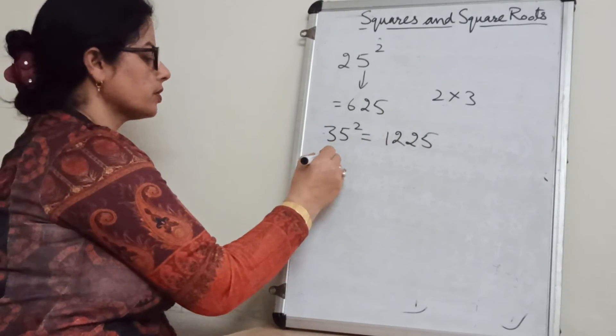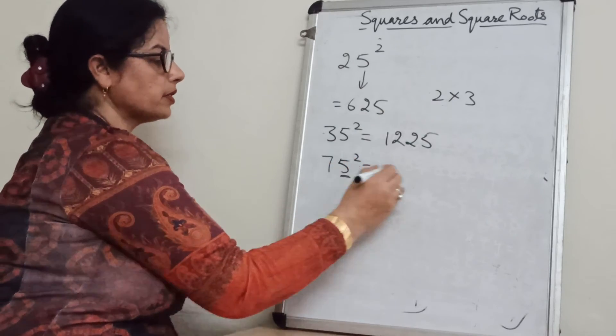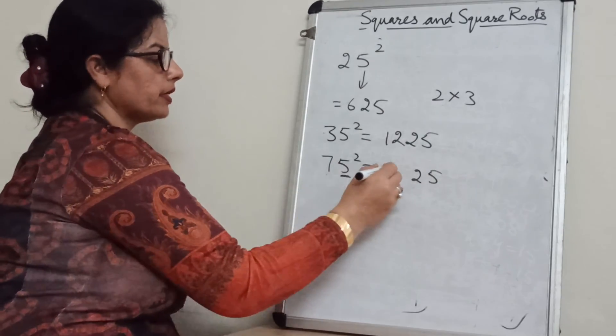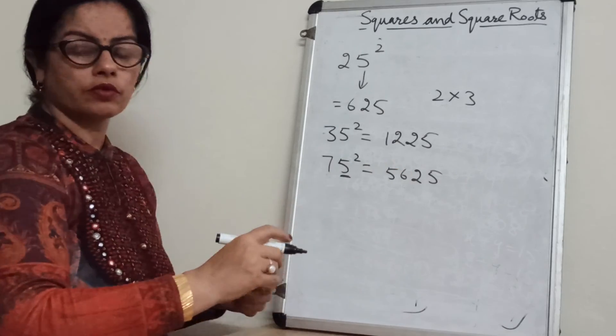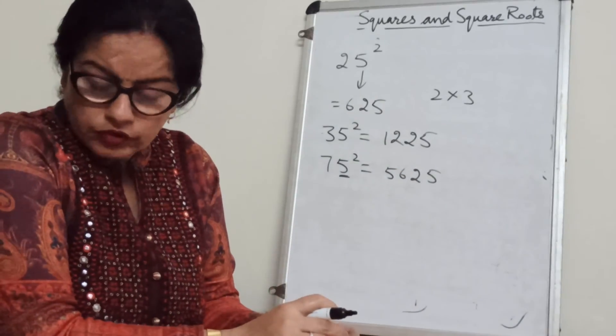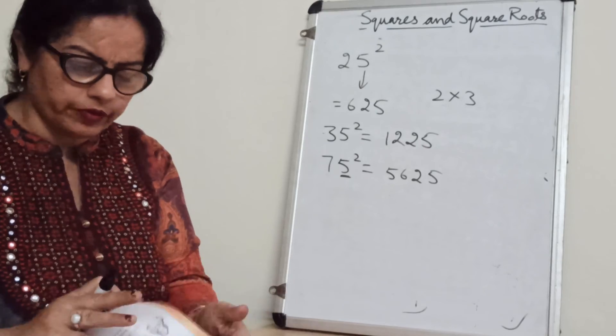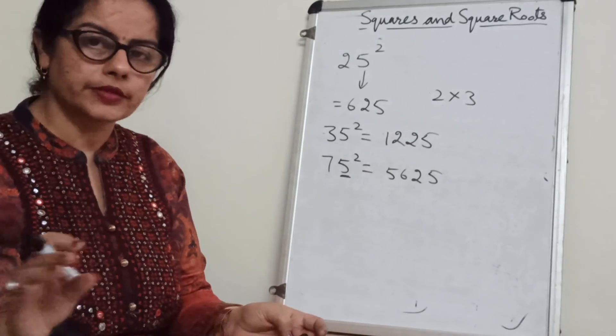Next is 75 square. 5 into 5 is 25. 7 into 8 is 56. Okay. So you can do question 1 of exercise 6.2 very easily. Okay. Thank you.